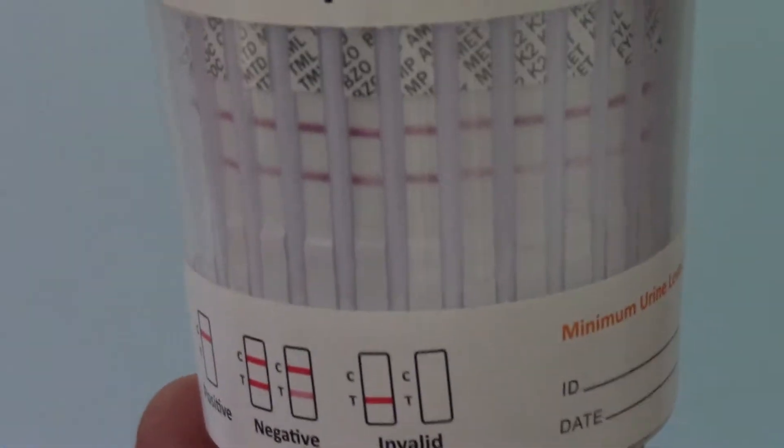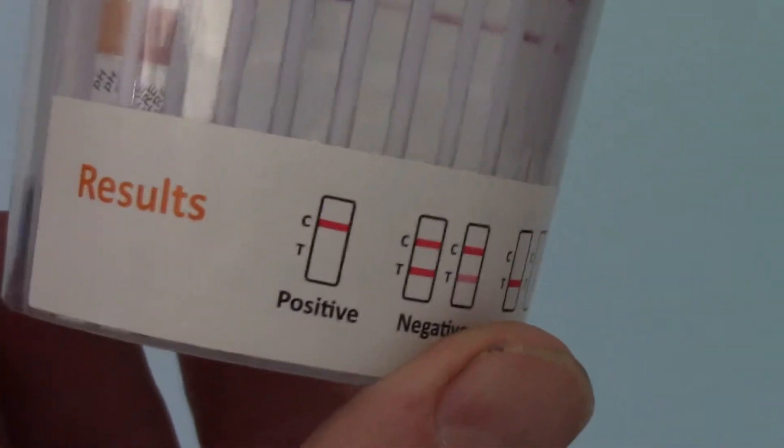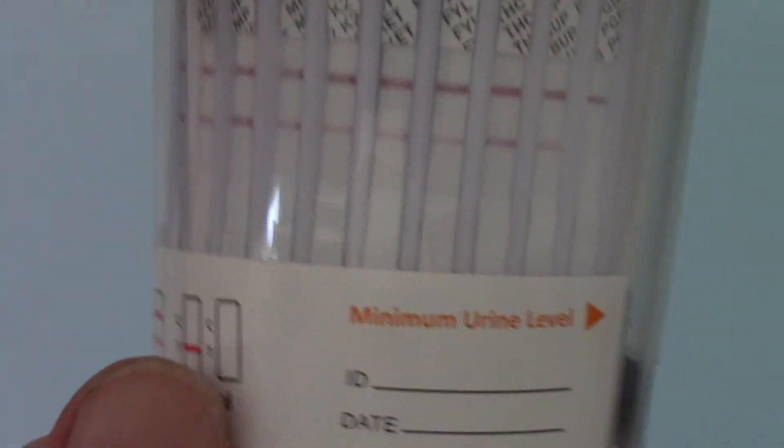So that is a very important point when you come to interpretation of these results. If any result was positive, there would be absolutely no line showing at all in the presence of the control line.